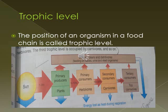The position of an organism in a food chain is called a trophic level. Green plants are at the basic or primary trophic level. The second trophic level consists of herbivores, and the third trophic level consists of carnivores. This is explained in detail in the diagram.